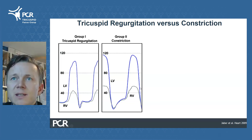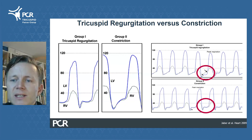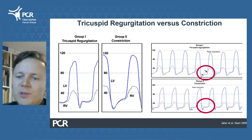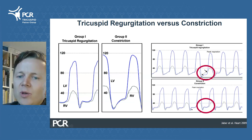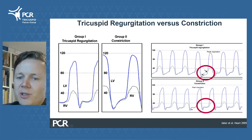When discordance is present, it rules out restriction. To make the distinction between TR and constriction, we observe diastolic pressure variations — only in TR does the right ventricular diastolic pressure sporadically exceed left ventricular diastolic pressure on deep inspiration.